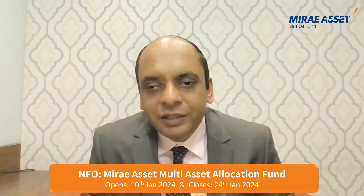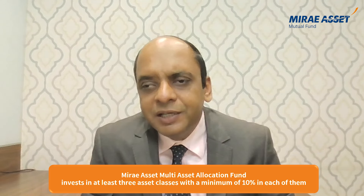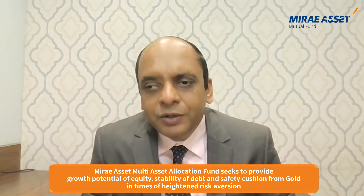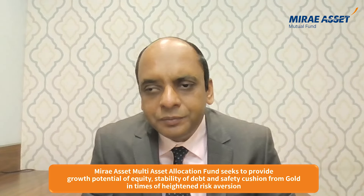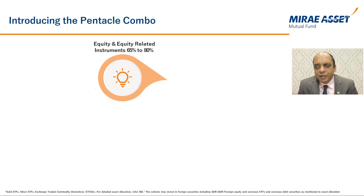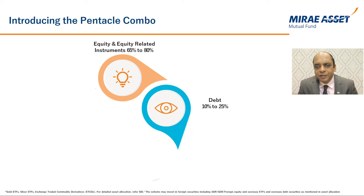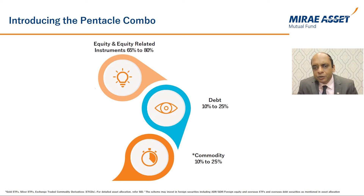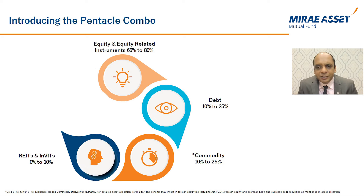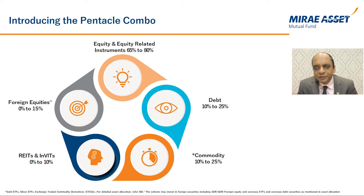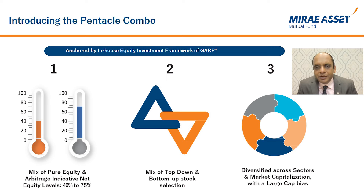Having looked at the need and importance of asset allocation, let's shift our focus to the Mirai Asset Multi-Asset Allocation Fund. By definition, the fund invests in at least three asset classes with a minimum of 10% in each. The fund seeks to provide growth potential of equity, stability of debt, and a safety cushion from gold in times of heightened risk. The fund will maintain a minimum of 65% gross in equity and equity-related instruments, 10–25% in debt securities, 10–25% in commodities including gold, silver, and exchange-traded commodity derivatives, up to 10% in REITs and InvITs, and up to 15% in foreign equities.